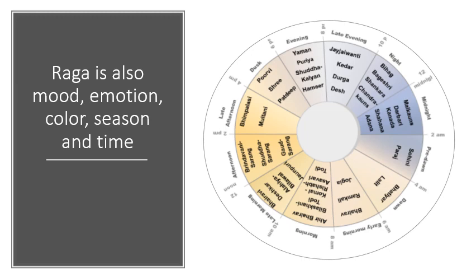Raga has a lot more connotations beyond just music. The word raga actually means 'color,' but it has all sorts of associations with particular moods, emotions, colors, seasons, and times of day. There are many rules of performance that ragas follow in a concert. On the right side of the screen you can see a wheel of different times of day and the ragas appropriate for each time — certain ragas are thought to evoke certain emotions just by being played.